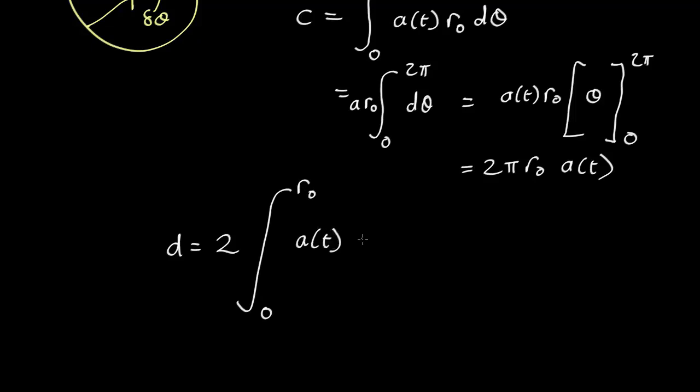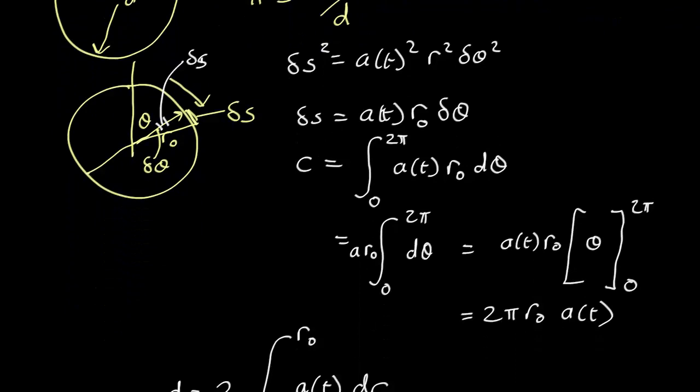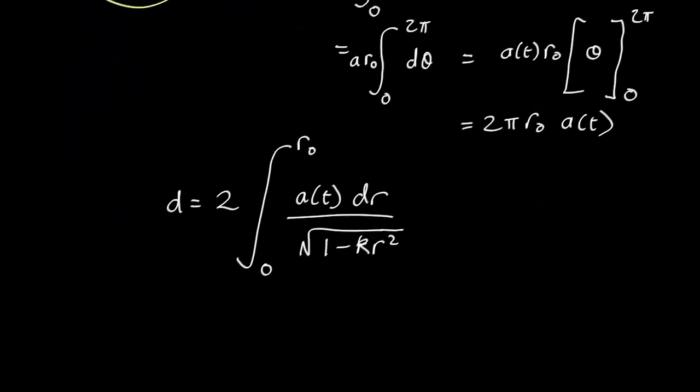Which is just a of t dr over the square root of 1 minus k r squared. That's k there. And you get that just by taking this equation here, setting both of those equal to 0 and taking the square root of this and that. Now once again A of t is a constant so you can take it out so you're looking at the integral of 1 over the square root of 1 minus k r squared. Now it turns out this is quite a tricky integral because the functional form depends on whether k is greater than or less than 0.